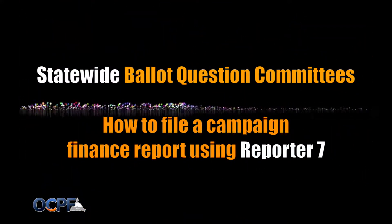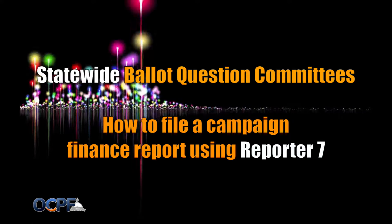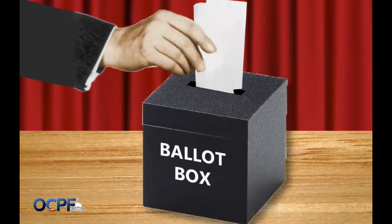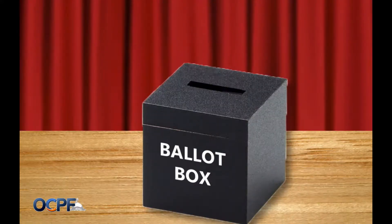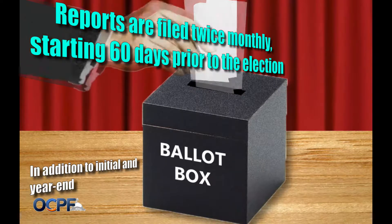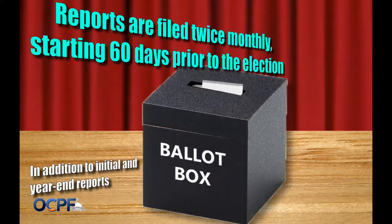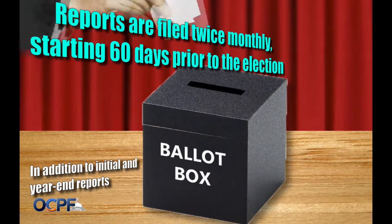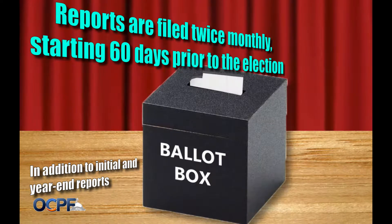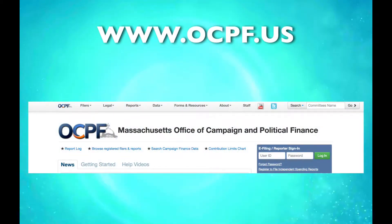How to file a ballot question report using Reporter 7. Ballot question committees that support or oppose questions in a statewide election file campaign finance reports on a twice-monthly schedule, starting 60 days before the general election. To file a report, log into Reporter 7.